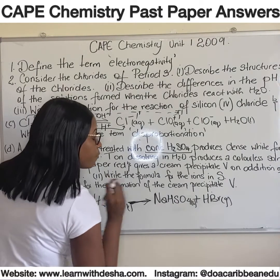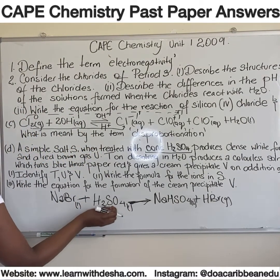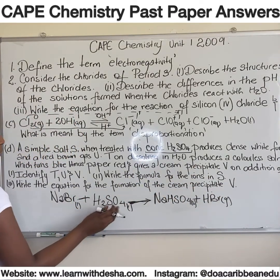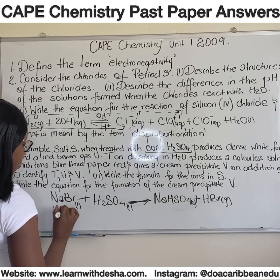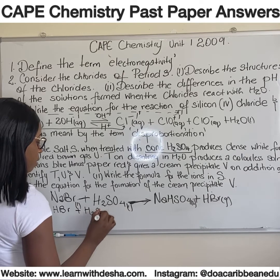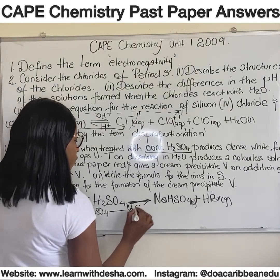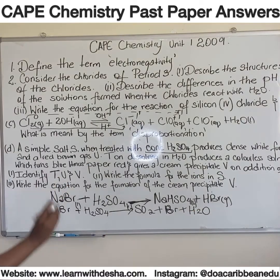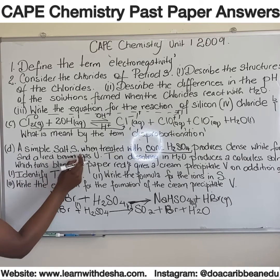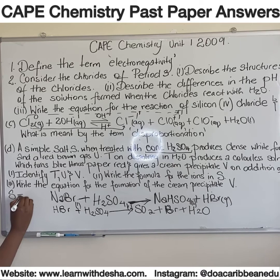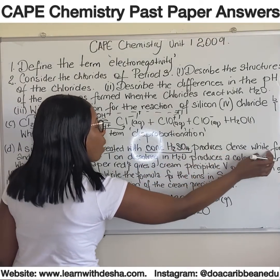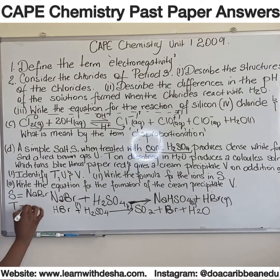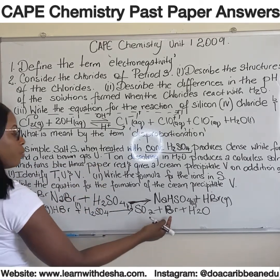The reaction proceeds further because the bromide reduces the sulfur. The hydrogen bromide reacts with sulfuric acid to give sulfur dioxide and water. So S is sodium bromide. The dense white fume T is hydrogen bromide gas, and the red-brown gas U is bromine.